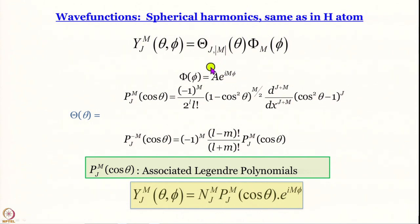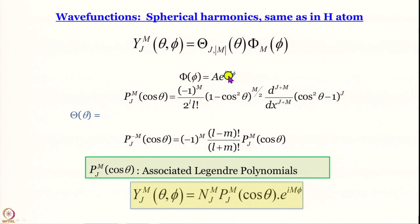J is another quantum number that comes when we work out the theta-dependent part. Note that the theta-dependent part and the phi-dependent part are related through M². This also gives us a limit on the value of M. J takes values 0, 1, 2, 3, 4... (positive integers), and the limit of M turns out to be J.